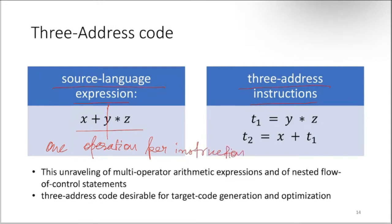Here you can see y multiplication z is one part - it's calculated first and that result is stored in a temporary variable t1. This variable may be created by the compiler itself. Then this part becomes t1, so the remaining operation is x plus t1, which we do and store in another temporary variable t2. So t2 gives us the final result.